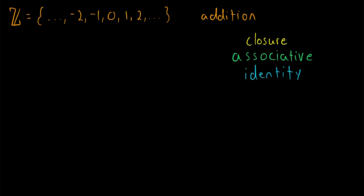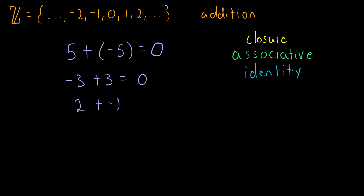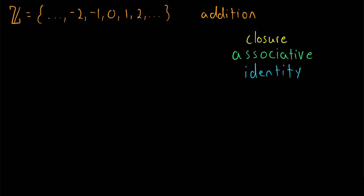Given any integer, for example five, can you give me some other integer that when added to five will produce the identity zero? You would just add the opposite or negative of whatever number you start with. So five plus negative five gives me the identity zero. Negative five is called the additive inverse of positive five, and five is the additive inverse of negative five — because adding them together gives us the identity element zero. An inverse exists for every integer: the inverse of negative three is positive three, and so on.